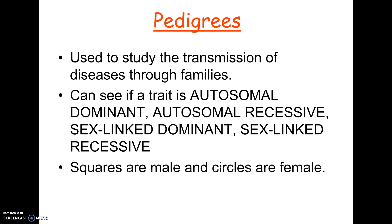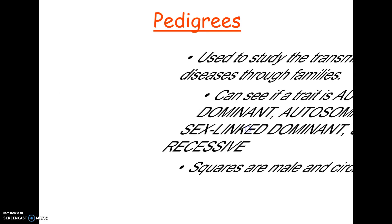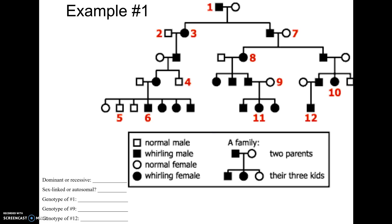One thing that they may or may not tell you on the pedigree is that squares are male and circles are female. Usually they say it, but I have seen cases where they don't tell you that, and you would be expected to know. So know that in a pedigree, squares are always your males, and circles are always your females. Also, usually they will tell you that the people who are shaded in are the people that actually have whatever the trait is. There are two ways this could be presented on a test.